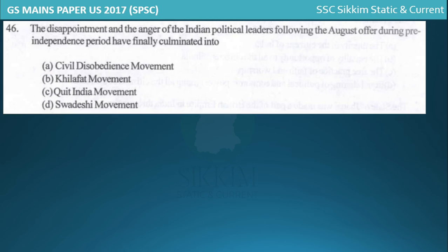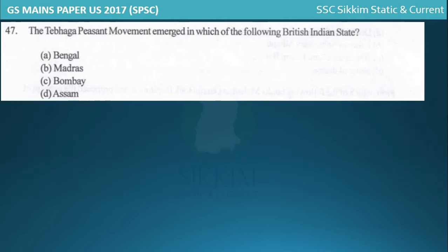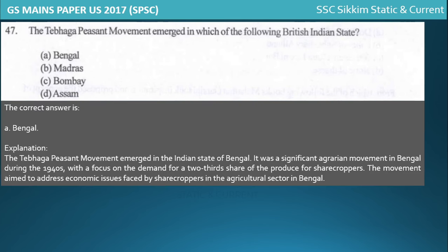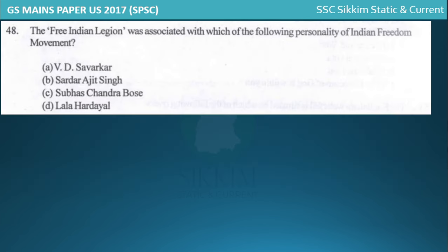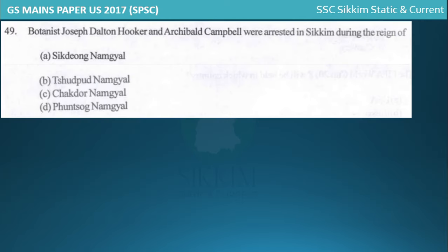For modern history, the disappointment and anger of Indian political leaders following the August Offer culminated in the Quit India Movement of 1942. The Tebhaga Peasant Movement in Bengal is also covered in modern history. The Free India Legion is associated with Subhash Chandra Bose. The botanists Joseph Dalton Hooker and Dr. Campbell were arrested in Sikkim.